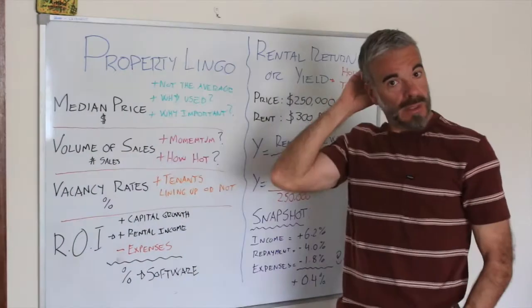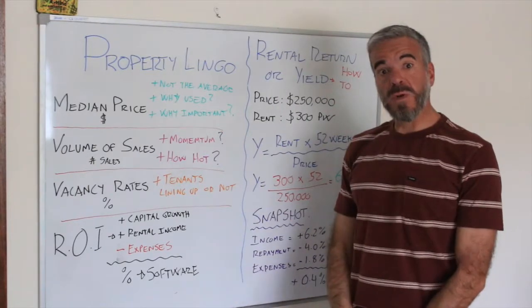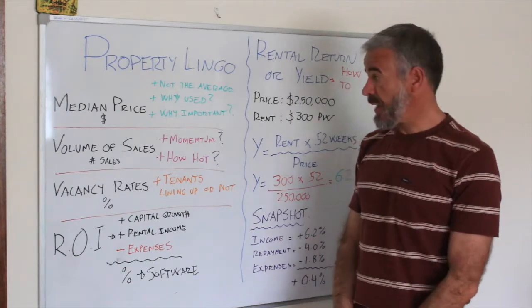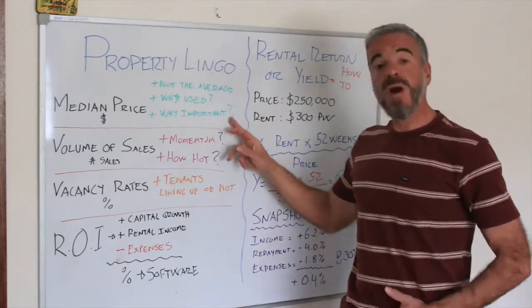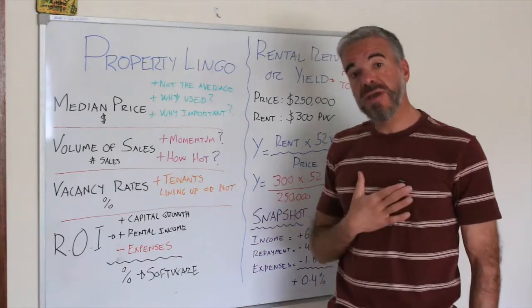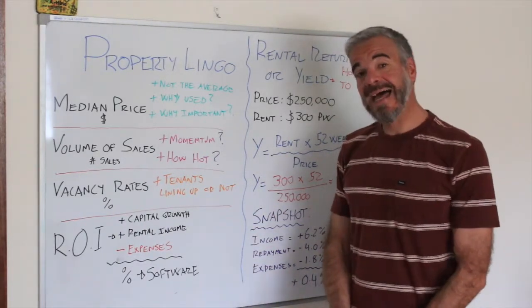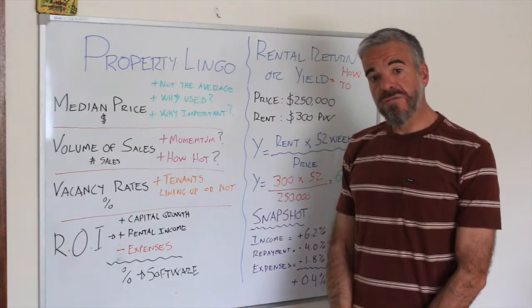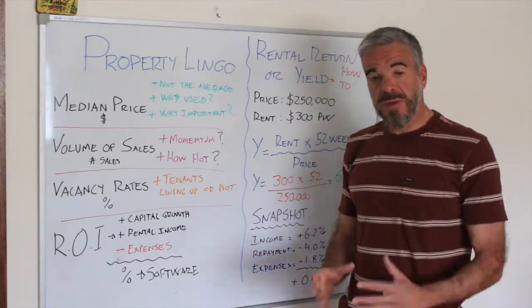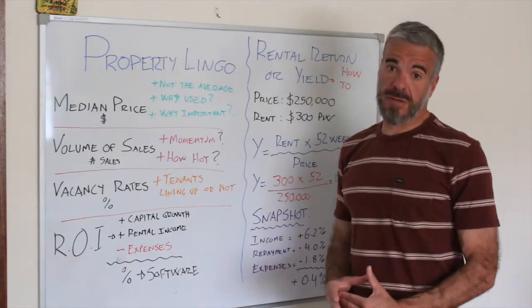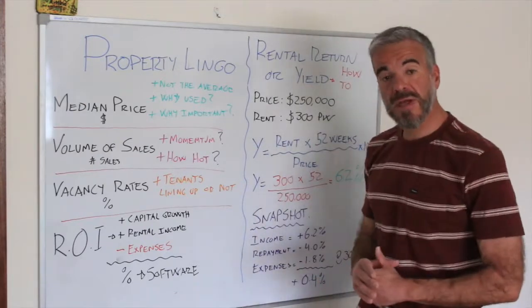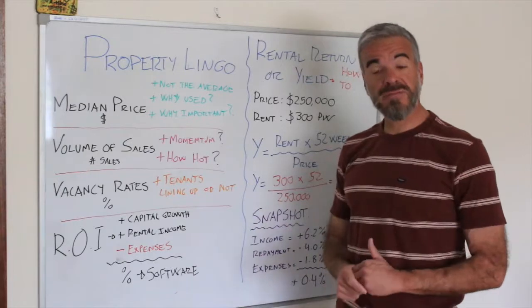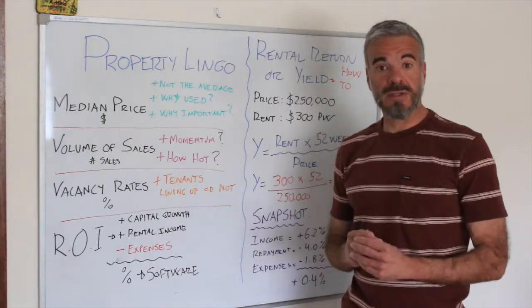First of all, median price. The median price is used as an indication of prices within an area — but remember, it's not the average. Why is it important? The median price is a good signal of the volume of sales price-wise that happen in an area. Going back to a $500,000 example, the majority of transactions in that area will be around $500,000.